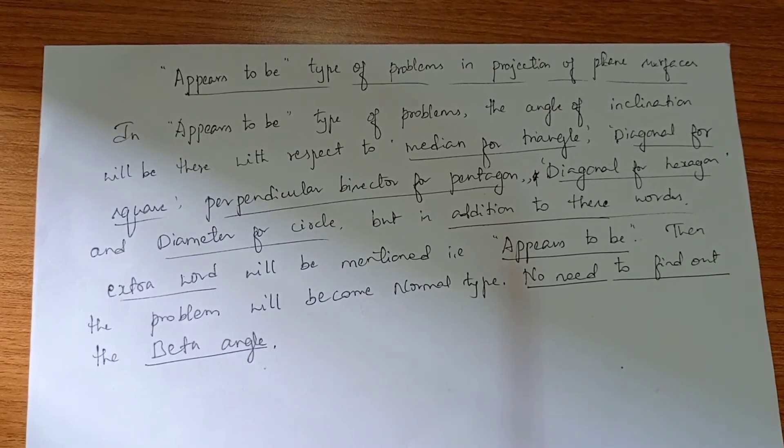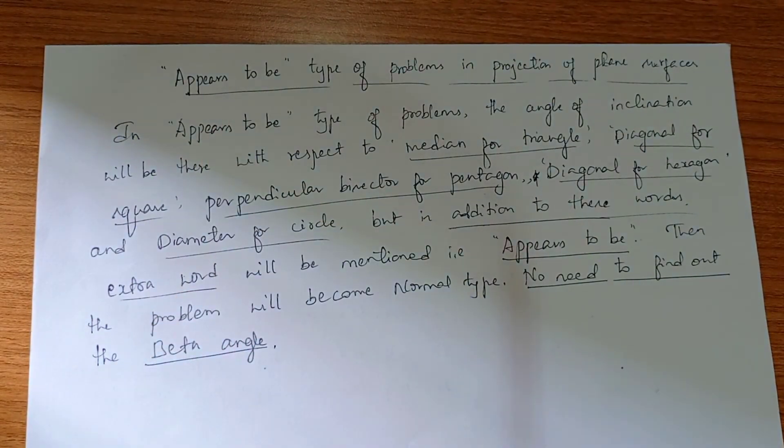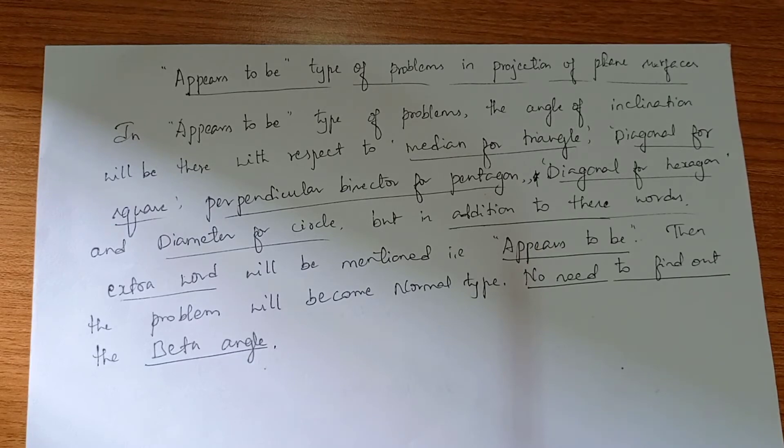Today we are going to learn about a new type of problem called 'appears to be.' This problem will be similar to the bit angle problem, but in this problem we should not find out the bit angle. Other than that, the problem will be the same, similar to bit angle.